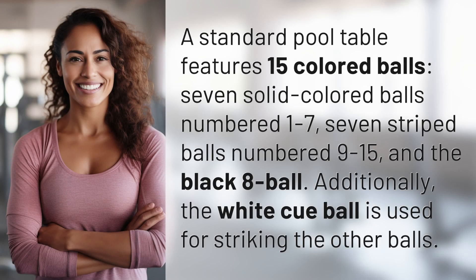A standard pool table features 15 colored balls: seven solid colored balls numbered 1 to 7, seven striped balls numbered 9 to 15, and the black 8 ball. Additionally, the white cue ball is used for striking the other balls.